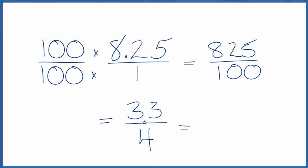4 goes into 33 eight times. 8 times 4 is 32. And we just have one left over. So 8 and 1 fourths, that would be the mixed number for the fraction 33 fourths.